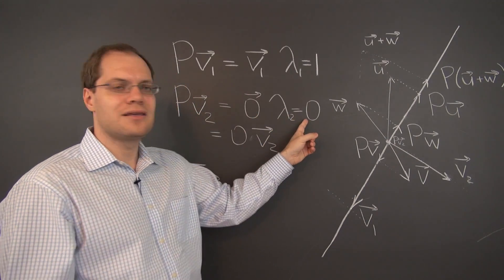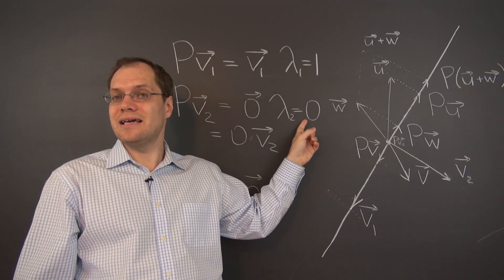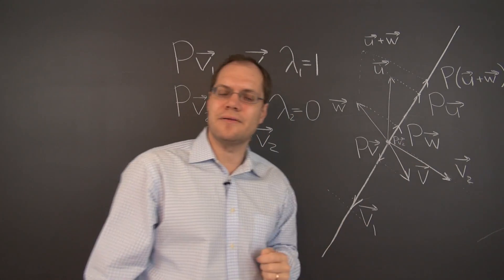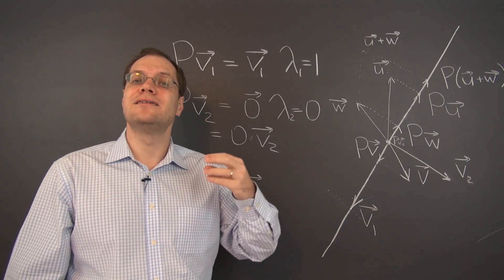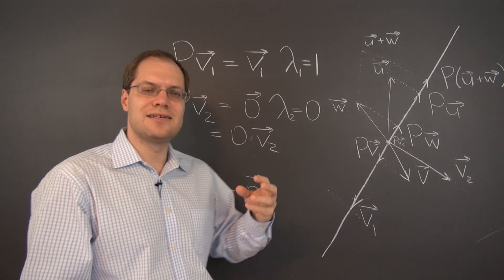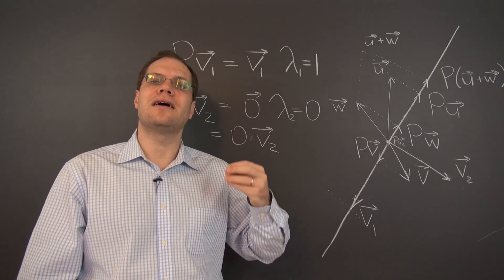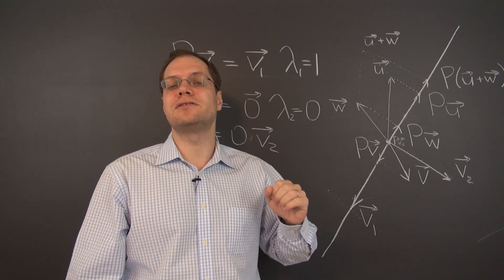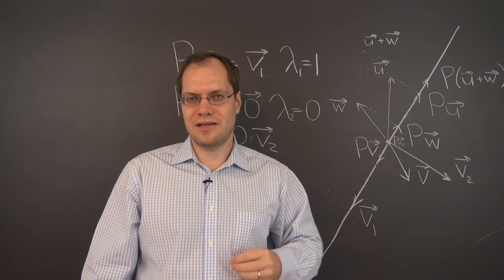But zero can very well be the eigenvalue corresponding to a non-zero vector, any vector along this line. And that tells us something interesting about the transformation. That's a legitimate eigenvalue and a very interesting eigenvector. And projection is the first linear transformation where we saw that property.